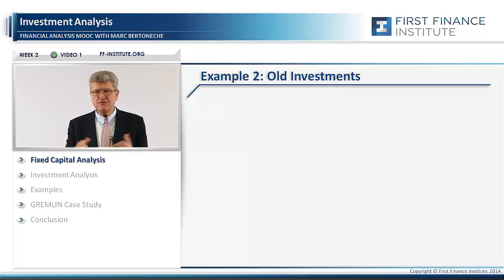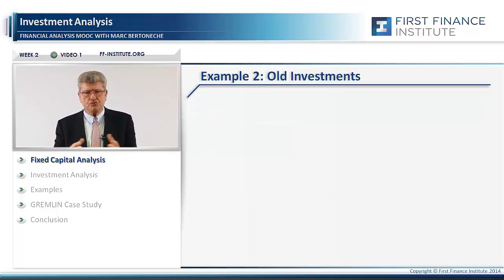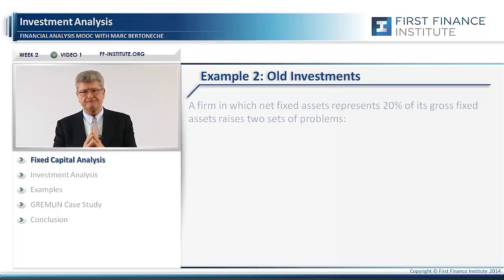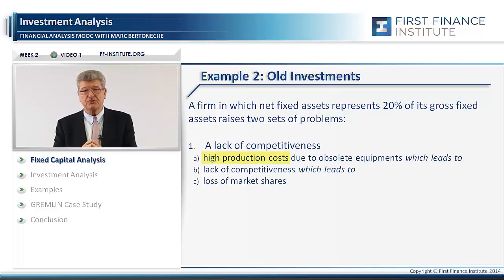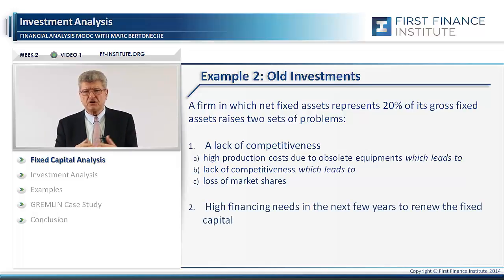On the contrary, if you find a company with a low ratio like 20%, it means that you have some crucial questions. First, there is potentially high production cost linked with the fact that the equipment is old, and therefore a loss of competitiveness vis-à-vis competitors. Secondly, we have the question of short-term financing problems the company will face to renew this old fixed capital in the next few years.